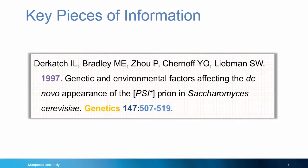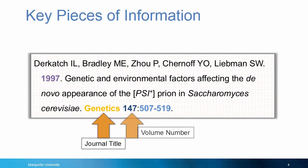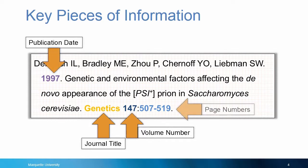Before starting our search, we need to locate some key pieces of information in the citation. These include the journal title, the volume number, the publication date, and the page numbers of the article.